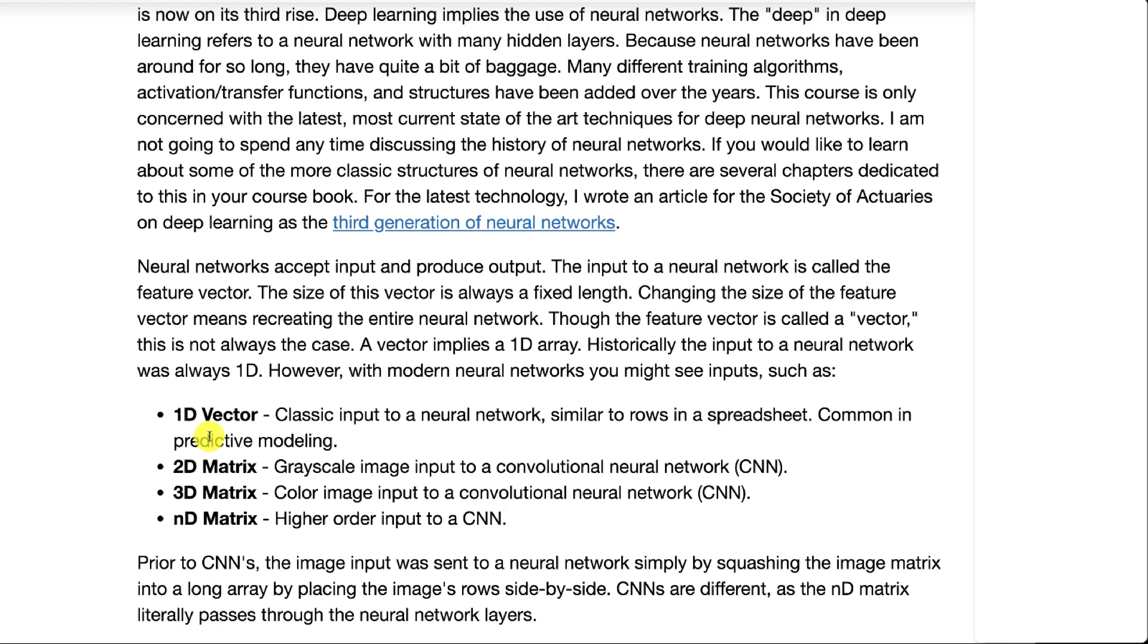You can also pass in a 3D matrix or 3D tensor. This would essentially be a color image where that third dimension is specifying the color of the individual pixels that you're passing in.